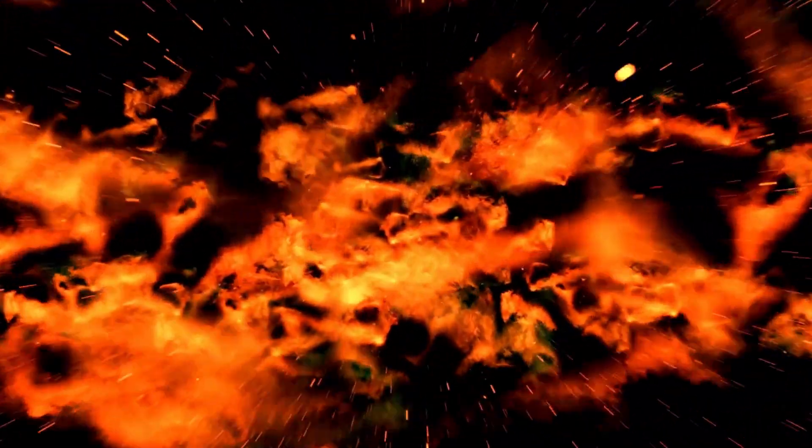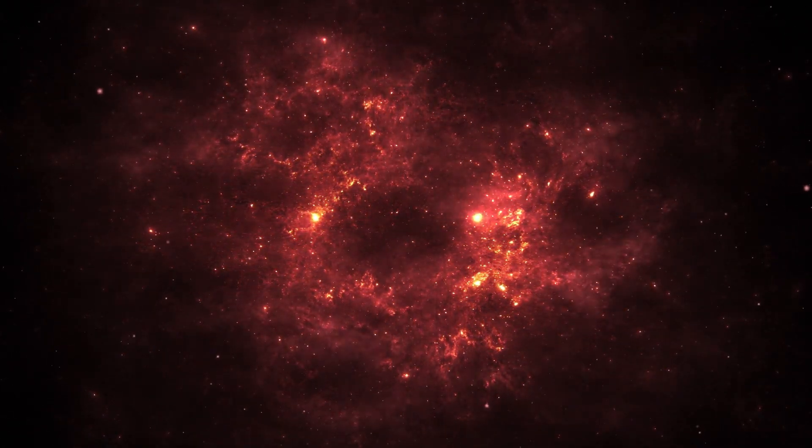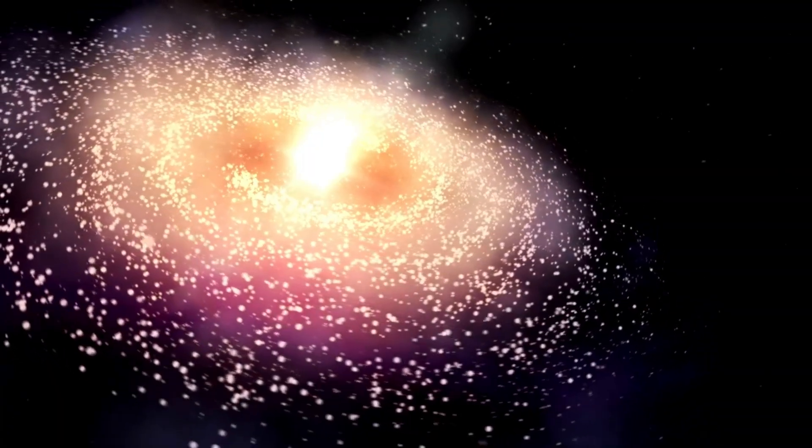However, as stars exhaust their hydrogen, they evolve, embracing new energy sources. In the case of Betelgeuse, as the hydrogen diminishes, it begins to burn helium, leading to the formation of carbon and oxygen. This transition from the main sequence phase to the helium burning phase is marked by the star's expansion into a red giant.